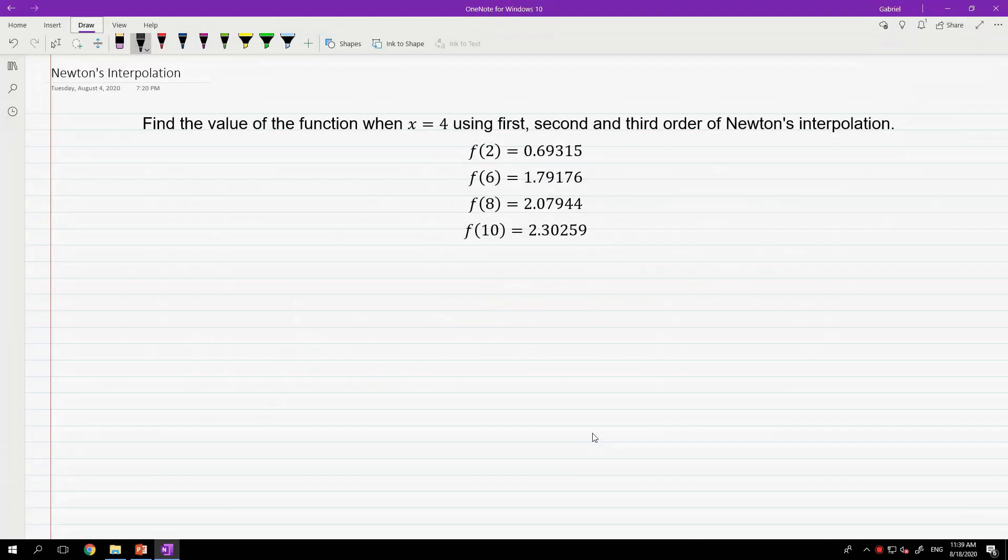To deeply understand the principle, let's solve a problem. Find the value of the function when x is equal to 4, using the first, second, and third order Newton's interpolation with the following data points. And to save time, let's just focus on the third order Newton's interpolation.